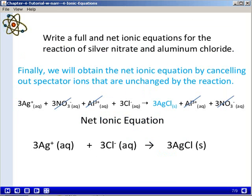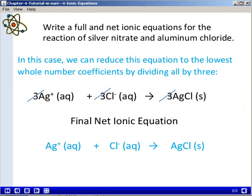Finally, we're going to obtain the net ionic equation by canceling out the ions that are unchanged on both sides, referred to as spectator ions. Those would be the nitrate ion and the aluminum ion. What we're left with at that point is a net ionic equation for the reaction that shows the reaction of three aqueous silver ions with three aqueous chloride ions to produce three formula units or three moles of silver chloride.